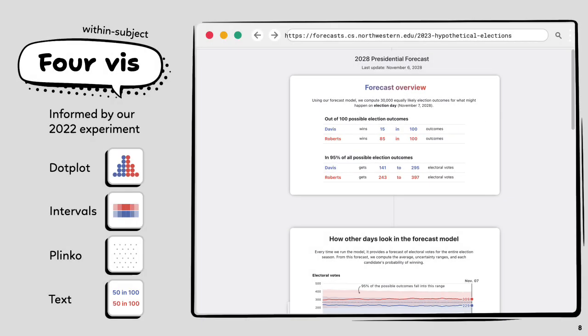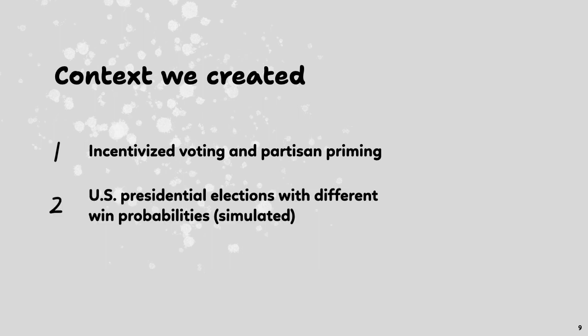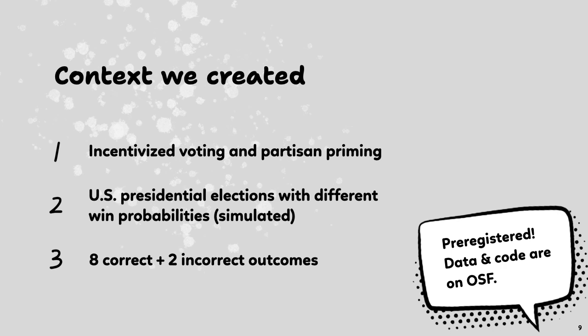To measure people's trust in these different uncertainty representations, we created an experimental context to get as close as possible to real-world elections. We incentivized voting and primed people to think about partisanship. All participants experienced 10 U.S. presidential elections with different win probabilities and a mixture of correct and incorrect outcomes.